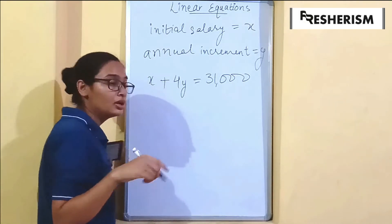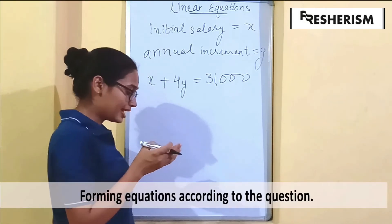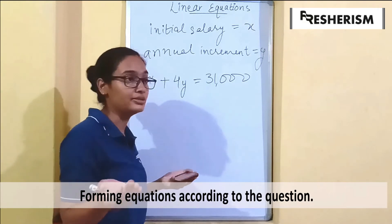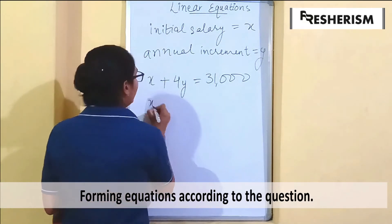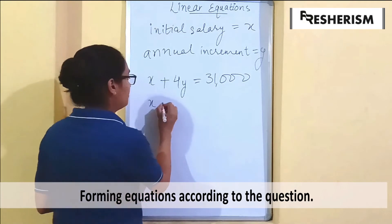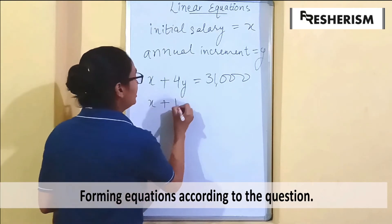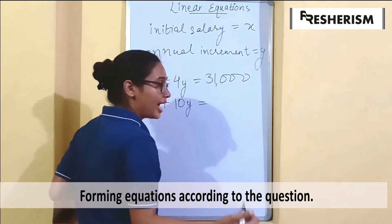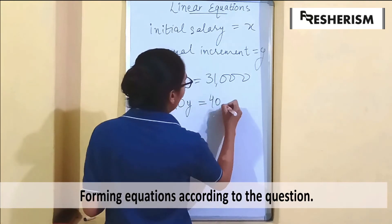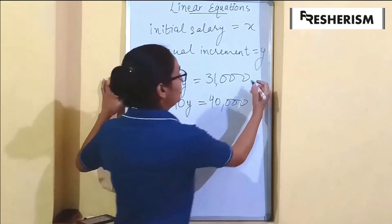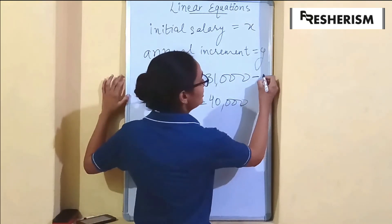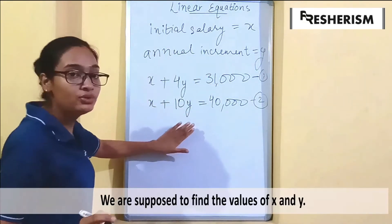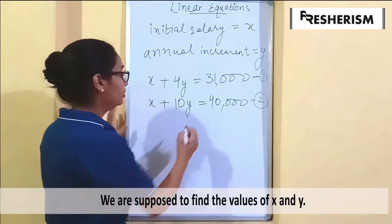It was given that his salary was 40,000 after 10 years. So the initial salary x remains the same, and 10 years of increment gives x plus 10y equals 40,000. These are the two equations — this is the first equation and this is the second equation.